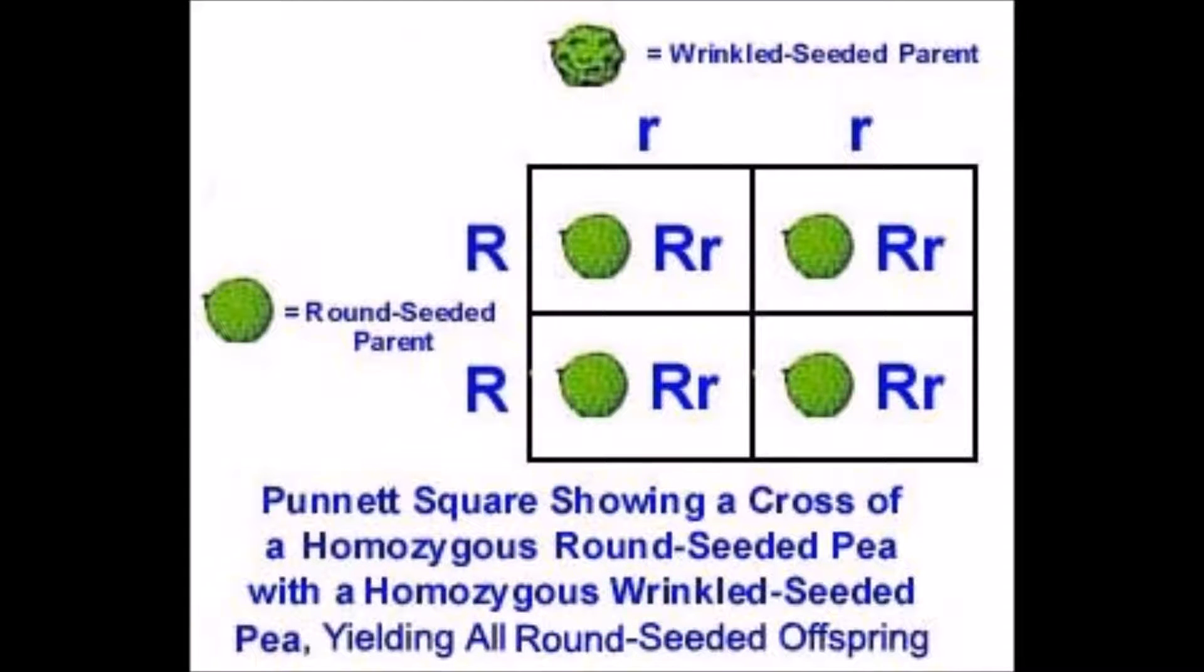So he put two pea seeds into the ground, one was wrinkled and one was round. And when they had offspring, guess what he found? Guess if their offspring were wrinkled or round.